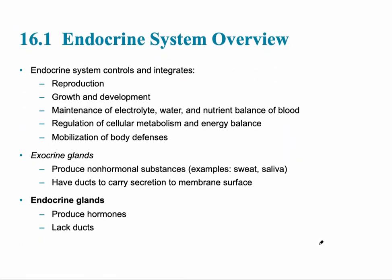The endocrine system controls and integrates many different functions, including reproduction, growth and development, and maintaining electrolytes, water, and nutrient balance of the blood. It also regulates cellular metabolism and energy balance, and mobilizes body defenses, so it's involved with the immune system. Exocrine glands, in contrast, produce non-hormonal substances like sweat and saliva released outside the body, and they have ducts that carry secretions to membrane surfaces.